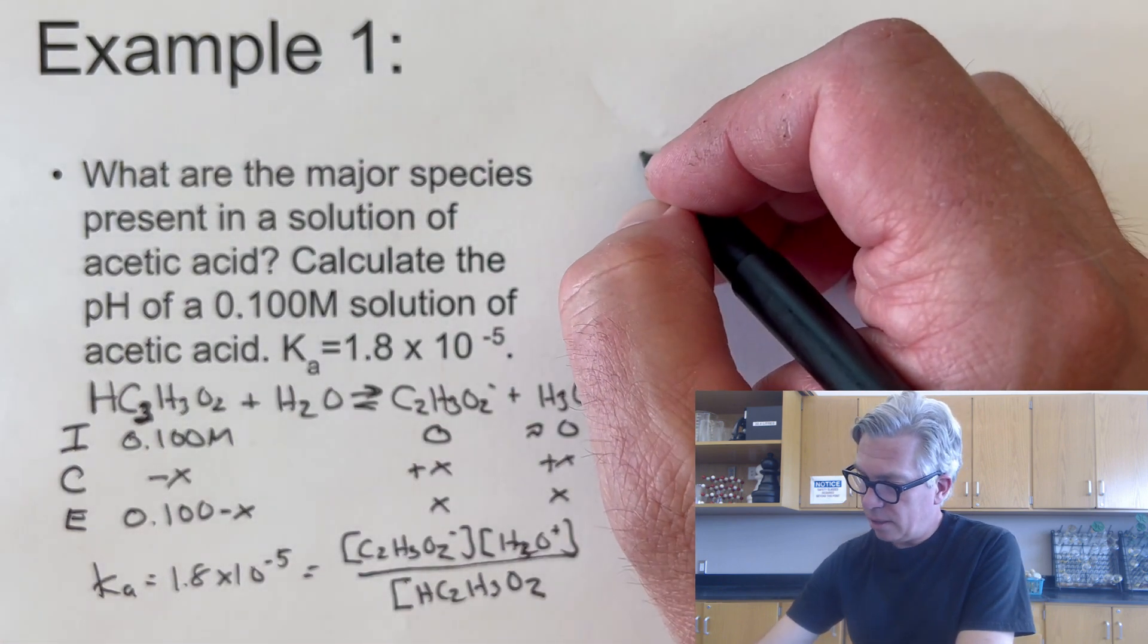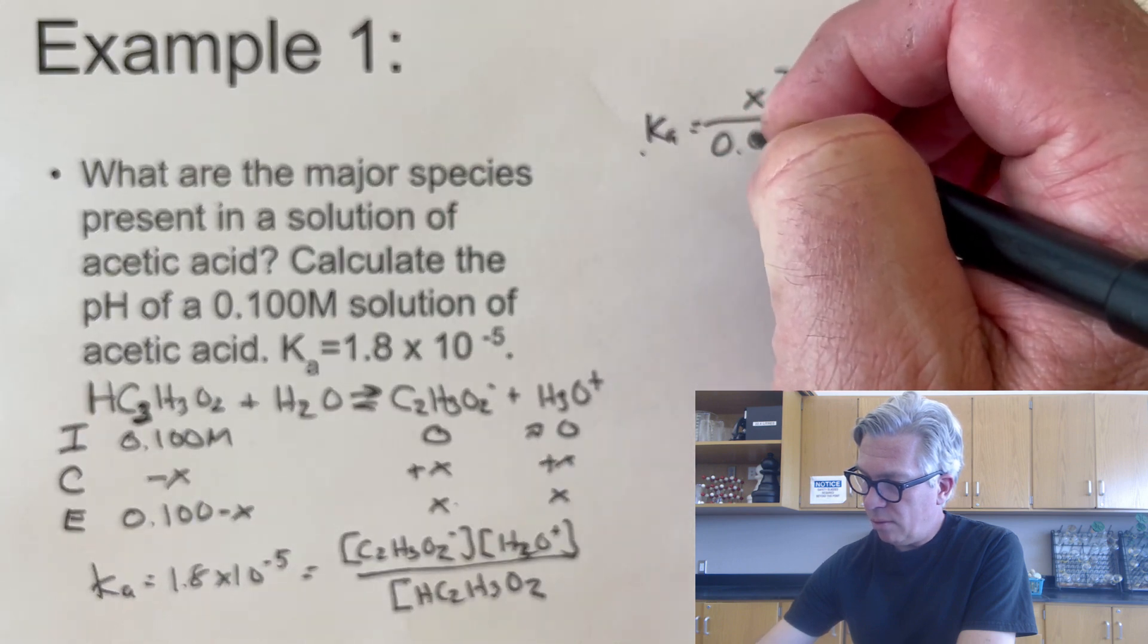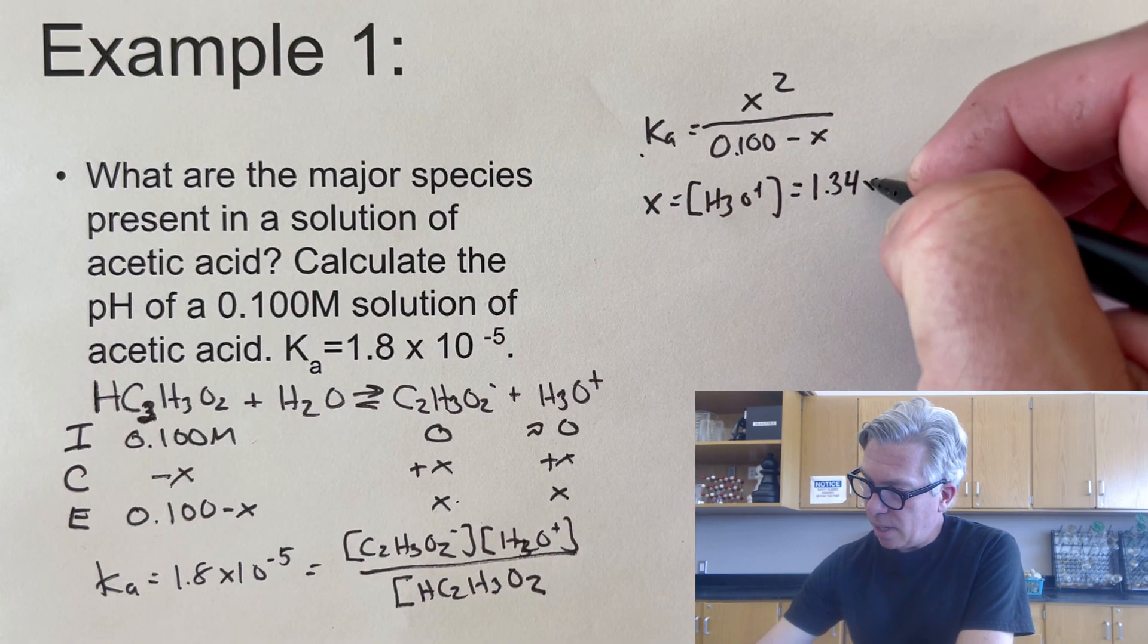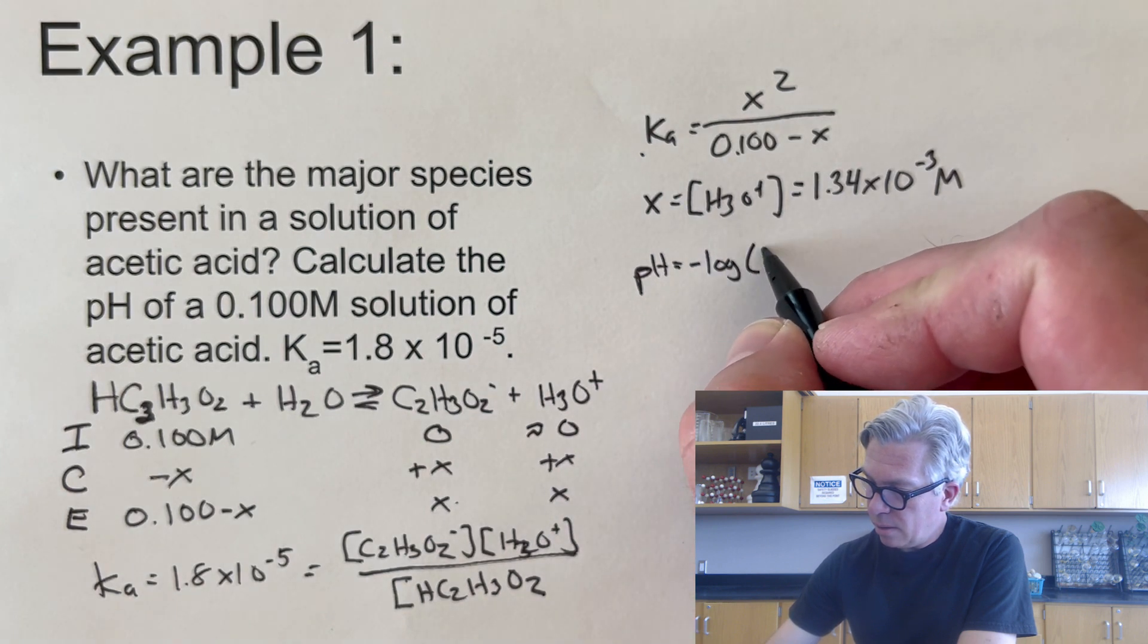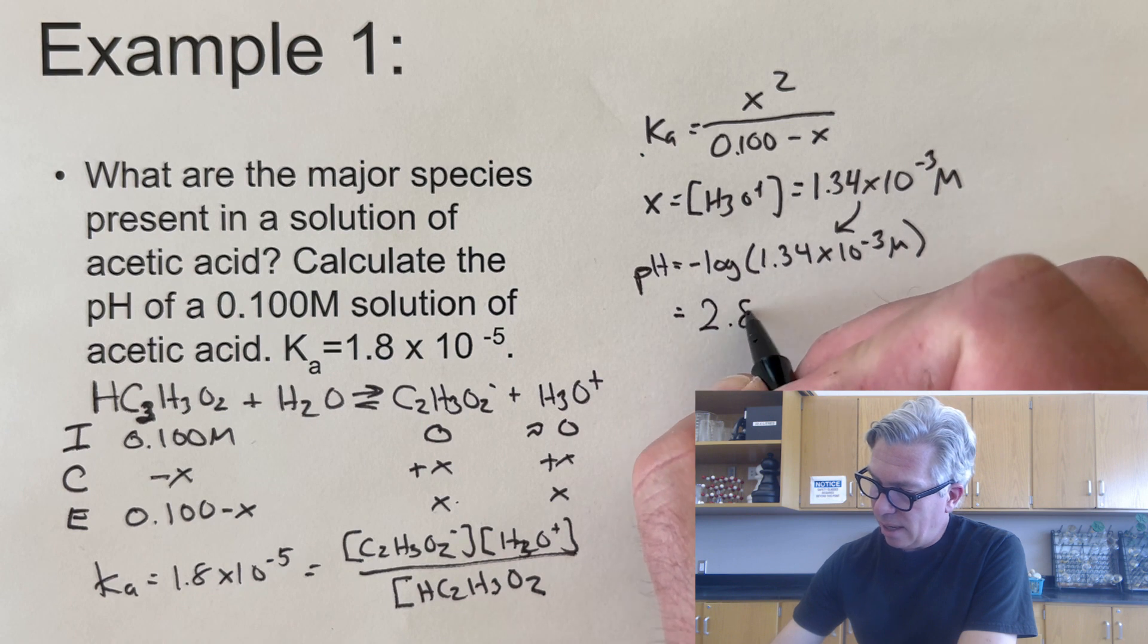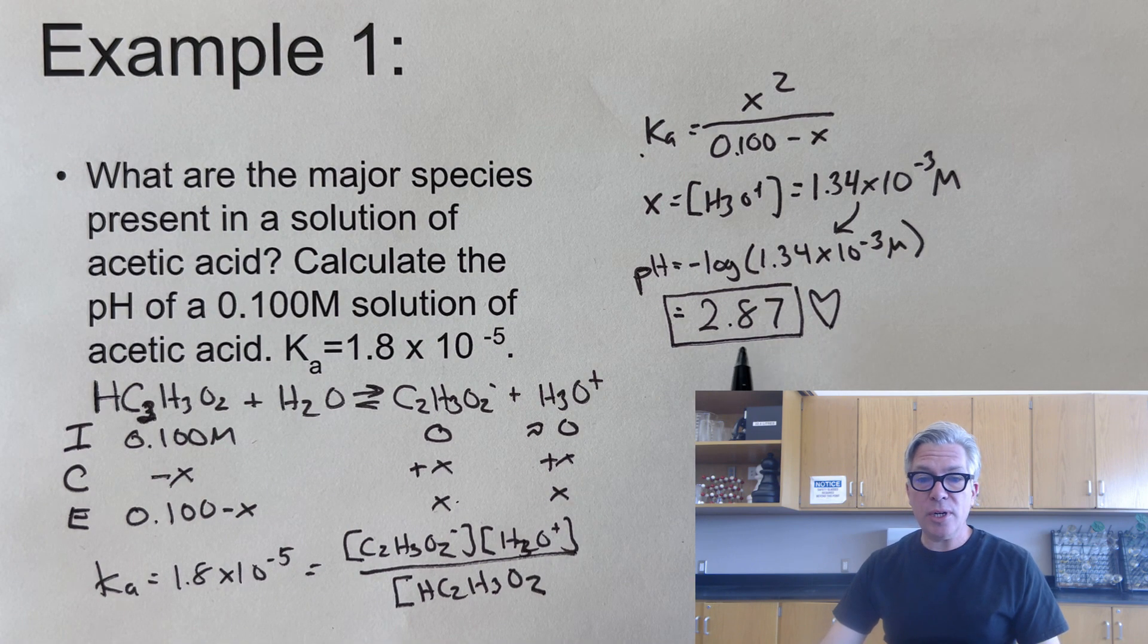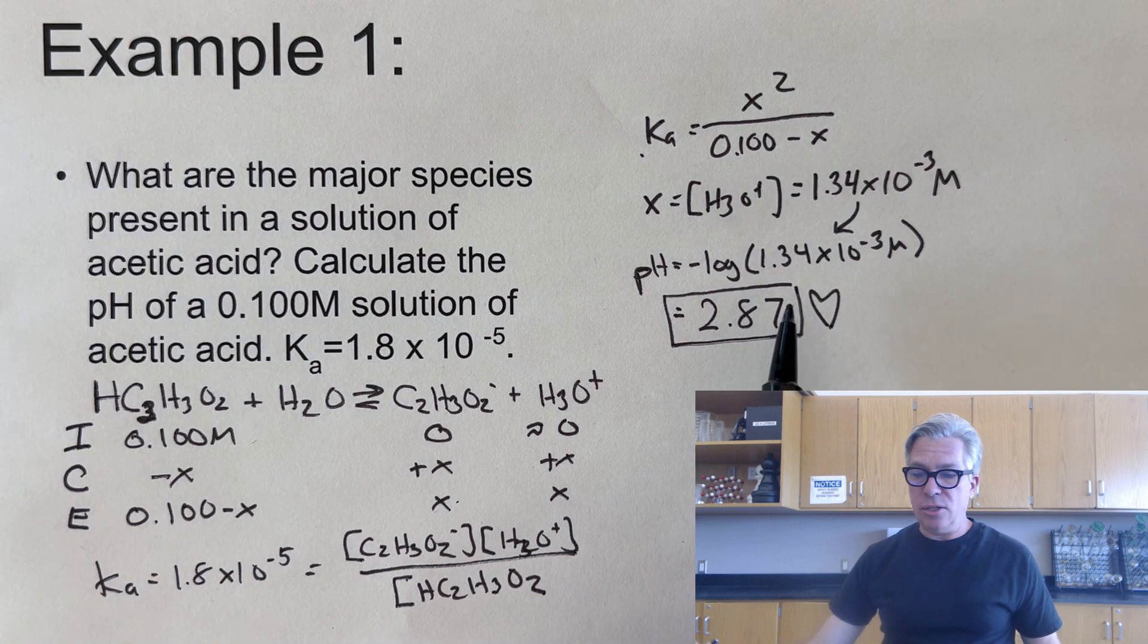And that's going to be equal to the acetate ion times the hydronium ion all over the original acetic acid. Ka is now going to be equal to X times X over 0.1 minus X, so X squared over 0.100 minus X. And if I solve for X, which is going to be equal to the H3O+ concentration because that's what X is, I get 1.34 times 10 to the minus third moles per liter. And if I take the negative log, the pH is going to be the negative log of 1.34 times 10 to the minus third. And I get a pH of 2.87, which is definitely not as low as it would be if it was a 0.1 molar solution of hydrochloric acid, for example, that would have a pH of 1. But here we have a 2.87, so it's not quite as acidic because it's a weak acid. But you have to do an ice table, you have to solve for X in your ice table and then plug that into your pH equation.